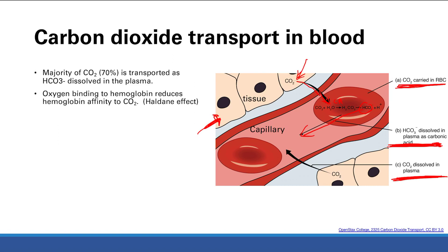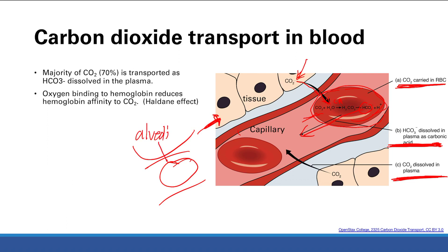Now, once this red blood cell with some carbon dioxide — because remember hemoglobin does carry some CO2 — gets to the lungs and reaches the alveoli, oxygen goes into the red blood cell. Once oxygen binds to the hemoglobin, it's going to reduce the hemoglobin's affinity to carbon dioxide. That promotes the release of carbon dioxide to the lungs so it can be expired out. This is called the Haldane effect.